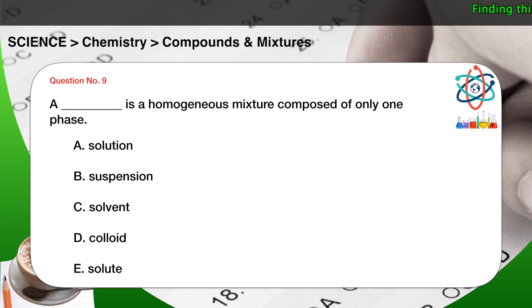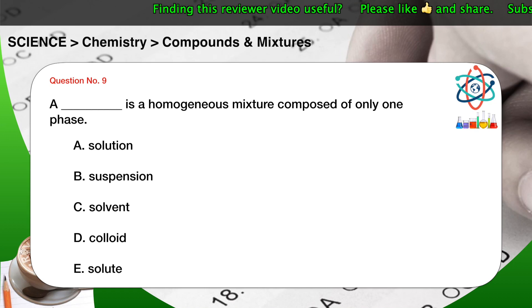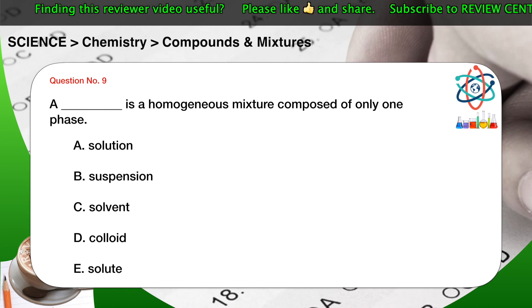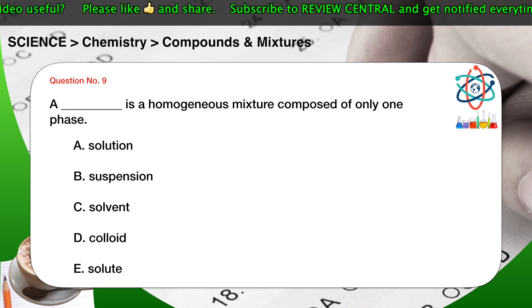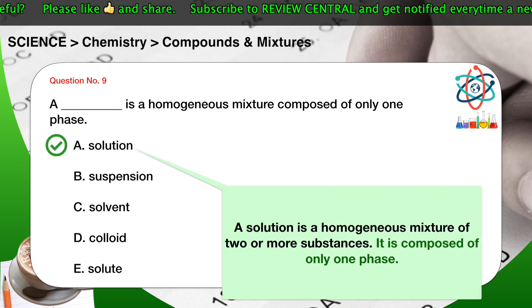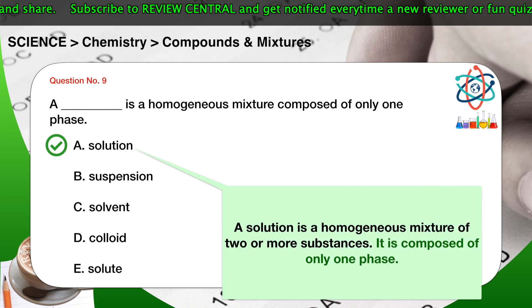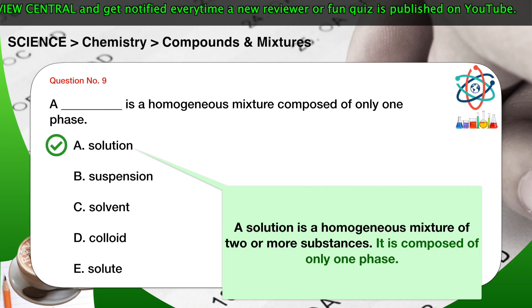Question number 9. A blank is a homogeneous mixture composed of only one phase. A. Solution. B. Suspension. C. Solvent. D. Colloid. E. Solute. The correct answer is A. A solution is a homogeneous mixture of two or more substances. It is composed of only one phase.